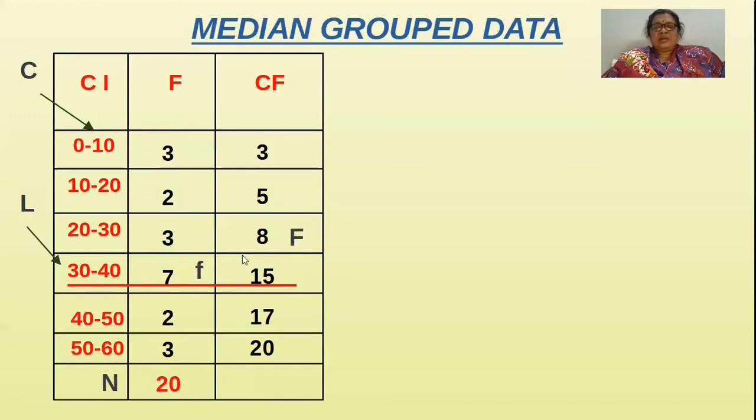This is capital F and this is small f. See carefully. The cumulative frequency before the median class, and the frequency in the median class is small f. That you have to remember carefully.